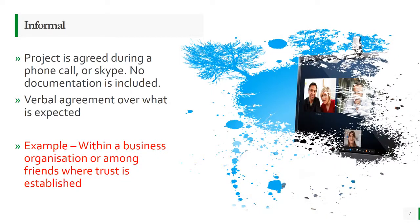Another type of client brief is informal. An informal client brief is where there's no written paperwork, no actual documentation — it's usually a verbal agreement on what they expect from you. This is often agreed during a phone call or through a Skype conversation. An example is within a business like your school, where one person might ask somebody else to do something, or between two friends where someone makes websites and you just ask them what you want.